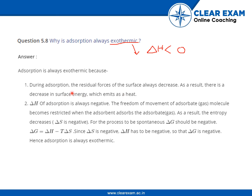The second point: delta H of adsorption is always negative. The freedom of movement of the adsorbate — the gas molecules — becomes restricted when the adsorbent adsorbs the adsorbate. When gas molecules get absorbed on the surface, they are restricted from moving further. As a result, entropy decreases and delta S becomes negative, since entropy is defined as the freedom of movement.